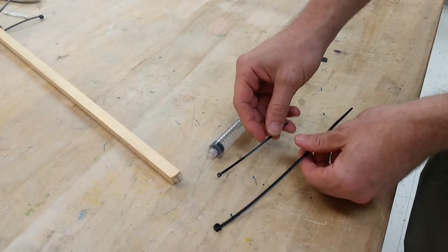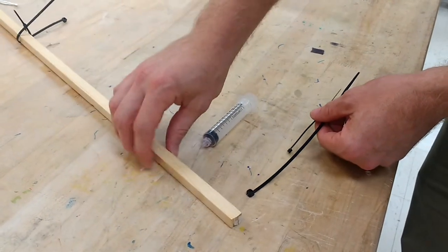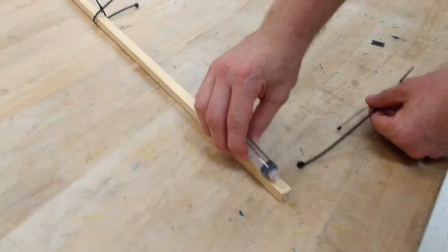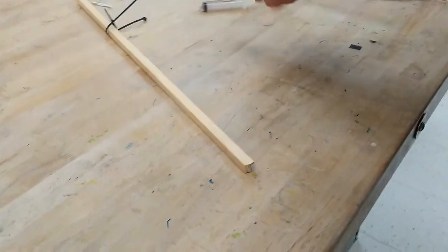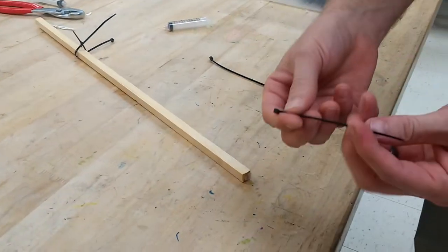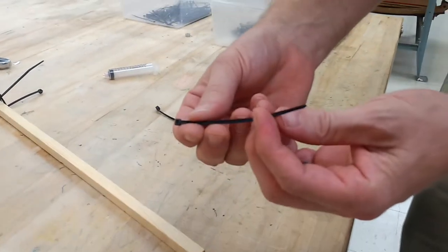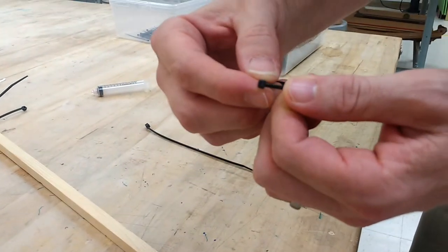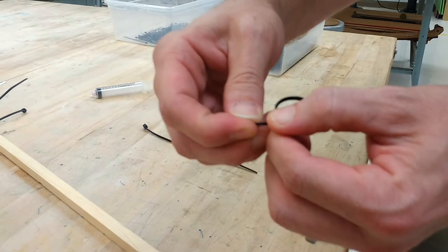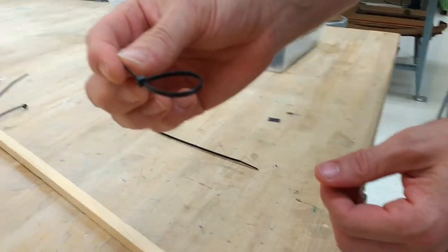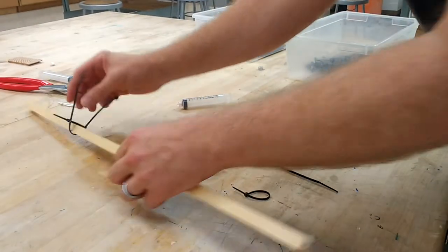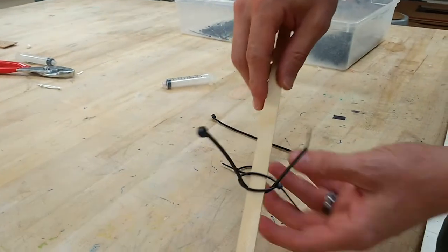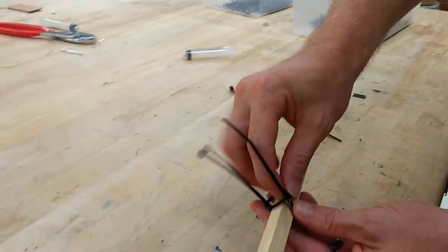There are two different sizes of zip ties. If you had a rod like this and you needed to attach your syringe to it, what you would start by doing is engaging the smaller zip tie just a little bit like that. That would then allow you to take the larger zip tie.